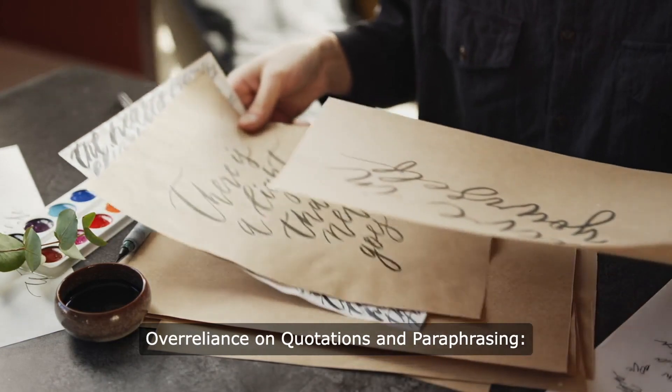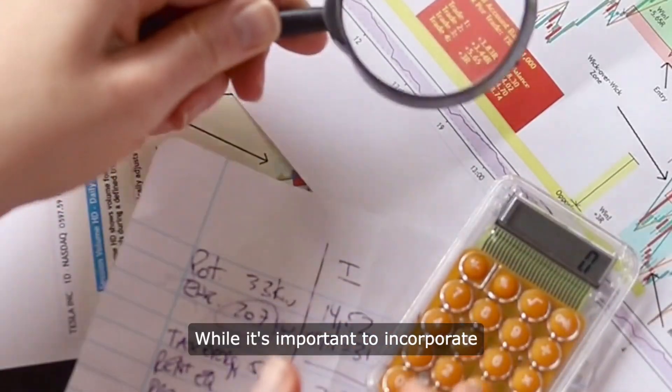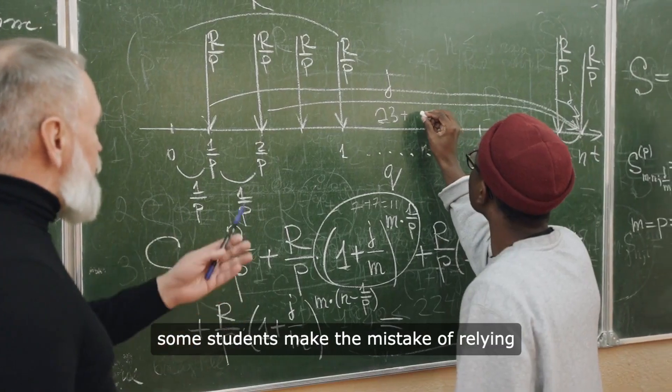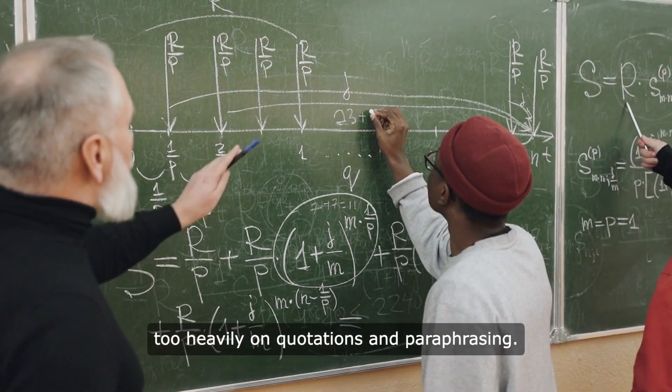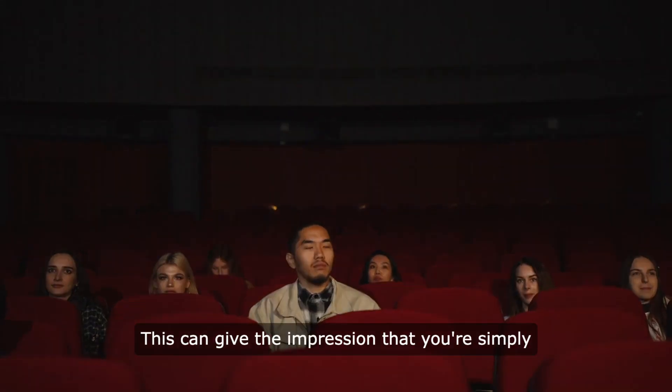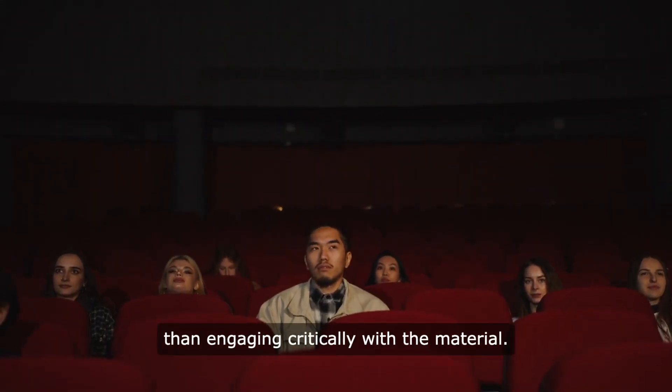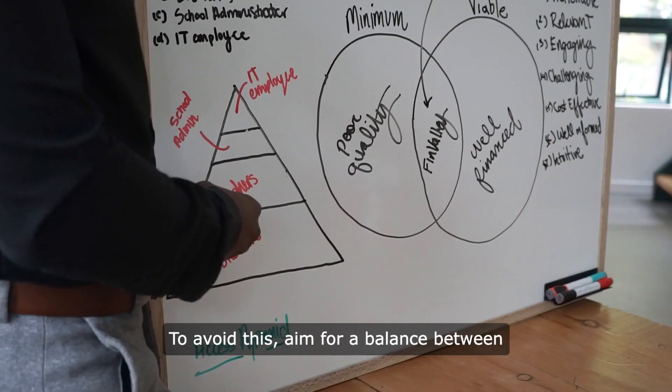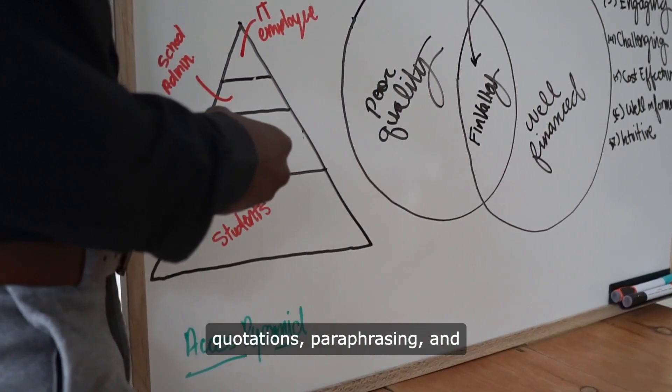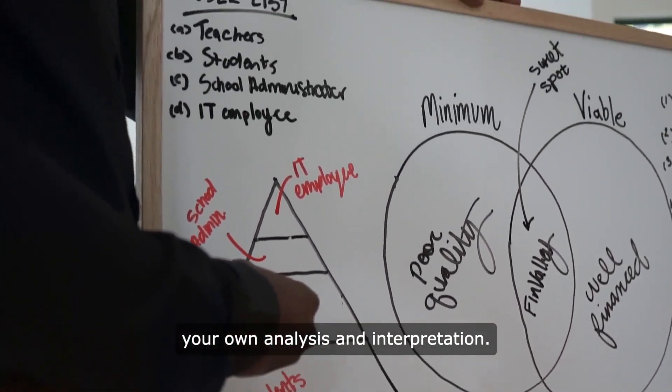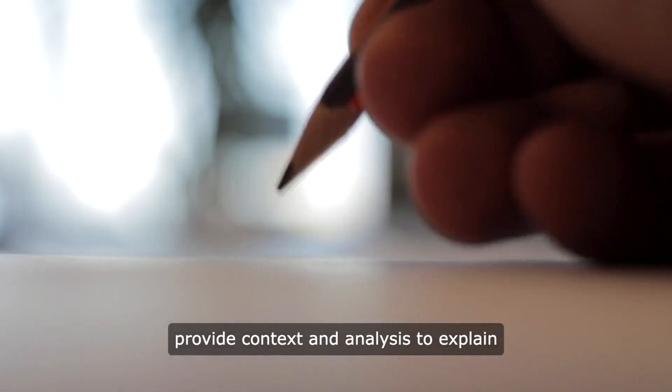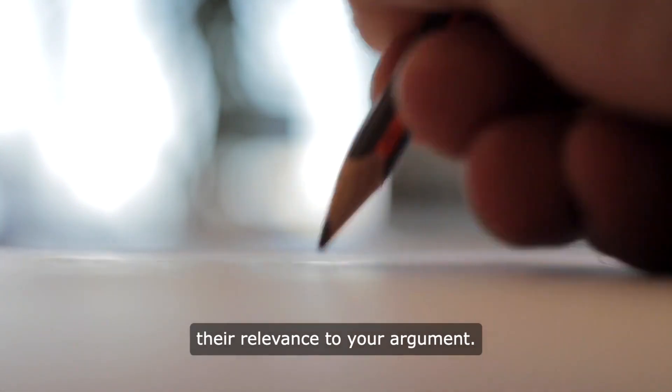Over-reliance on quotations and paraphrasing. While it's important to incorporate evidence from external sources to support your arguments, some students make the mistake of relying too heavily on quotations and paraphrasing. This can give the impression that you're simply regurgitating the ideas of others rather than engaging critically with the material. To avoid this, aim for a balance between quotations, paraphrasing, and your own analysis and interpretation. Use quotations sparingly and always provide context and analysis to explain their relevance to your argument.